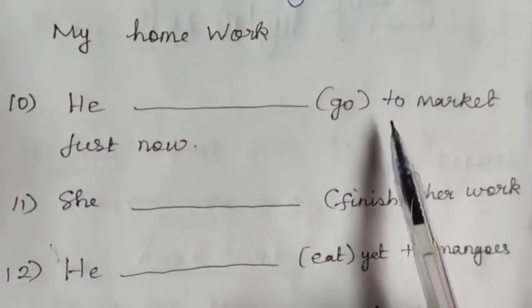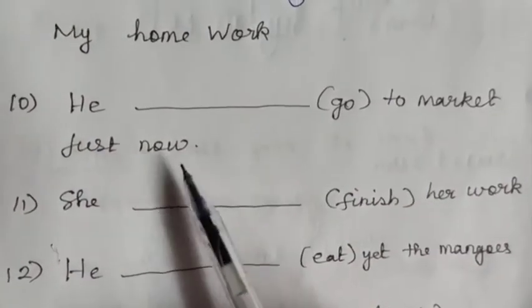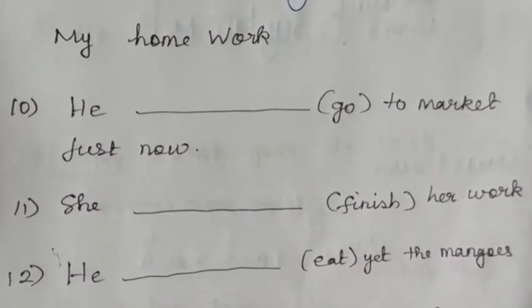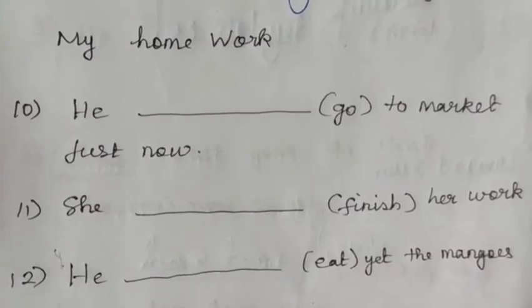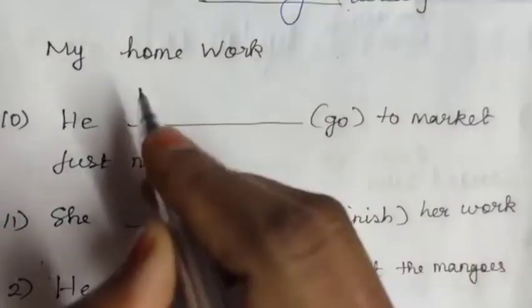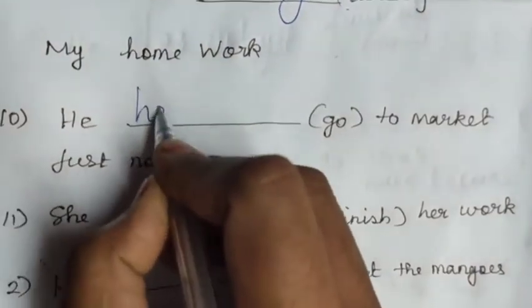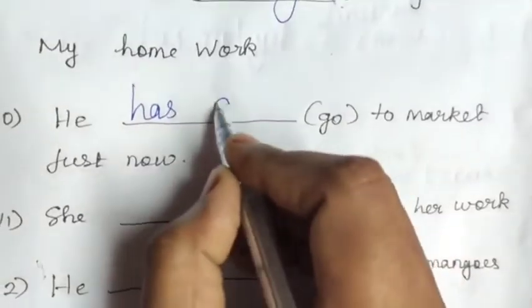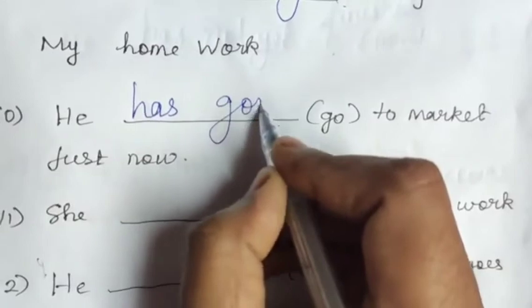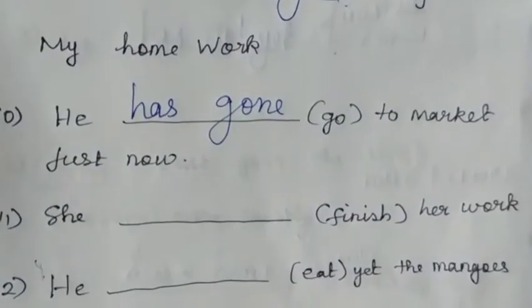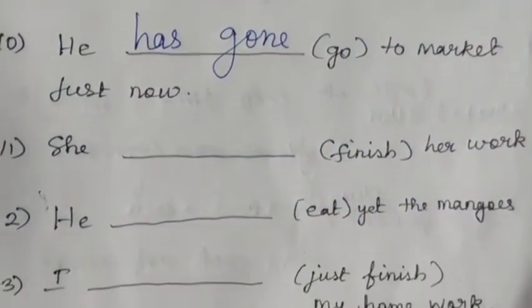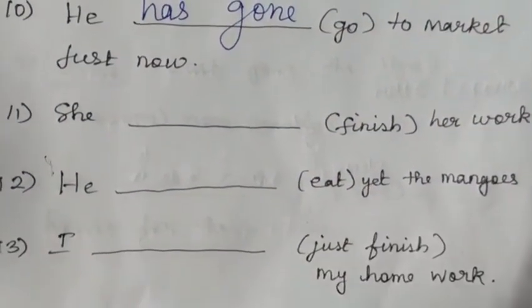Tenth: 'He dash go to market just now.' 'Just now' is a clue word of present perfect tense. 'He' is singular, so 'has'. Go-went-gone; verb 3 is 'gone'. Answer: 'He has gone to market just now.'